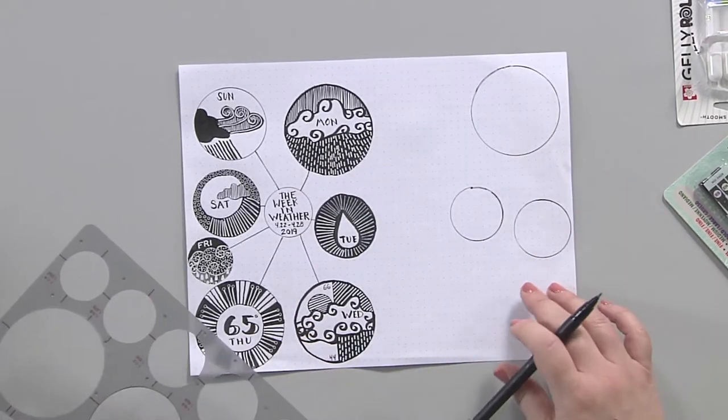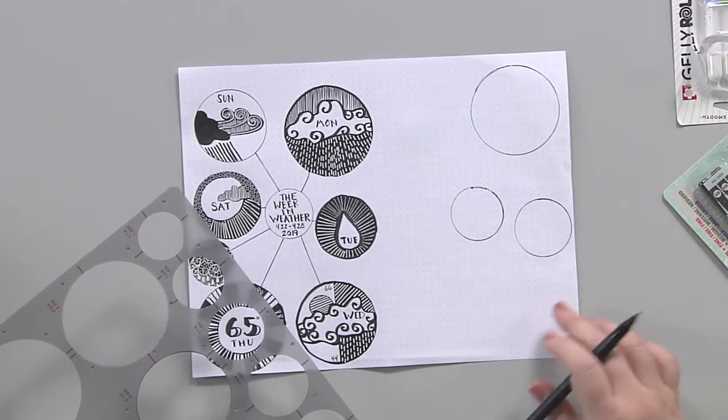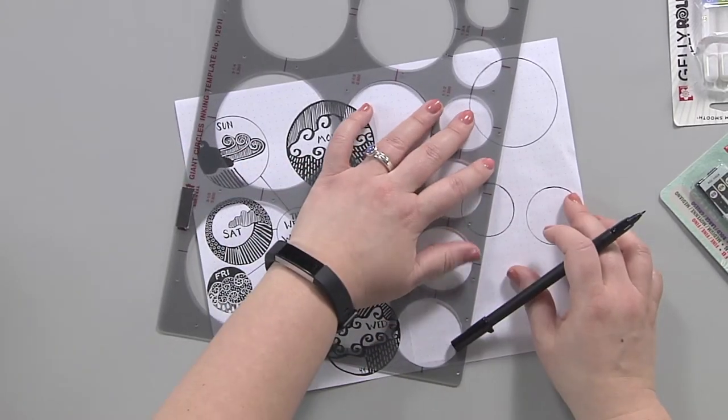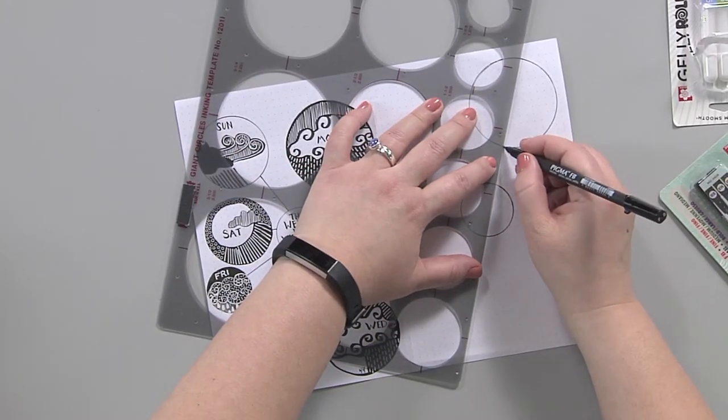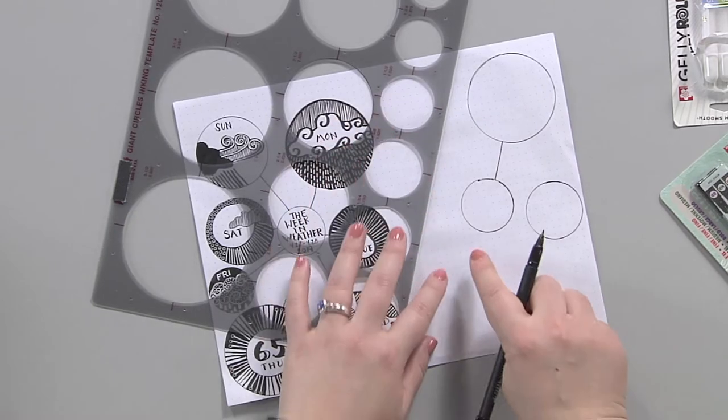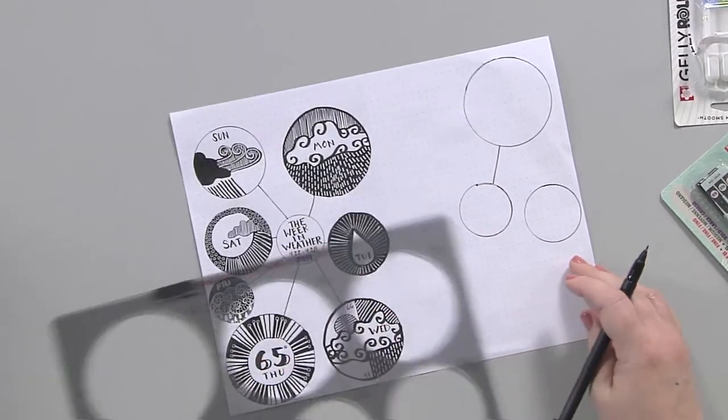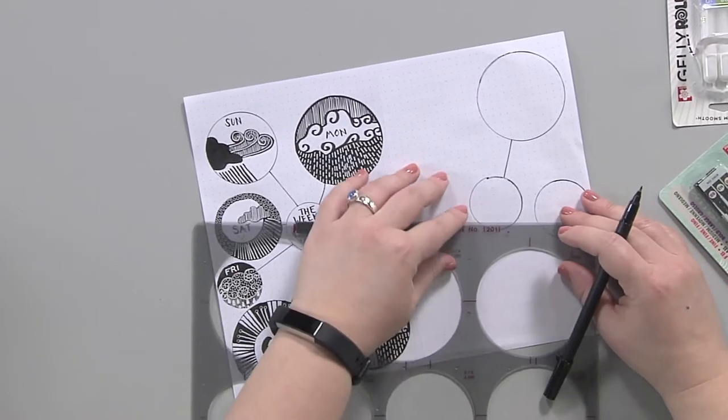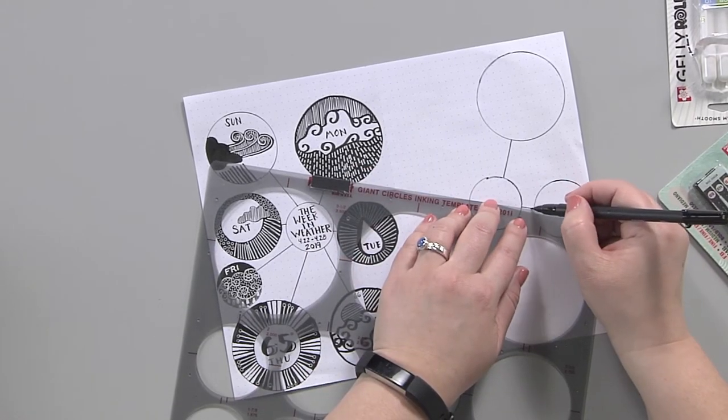Once you've done all the circles you're going to use lines to connect them. I suggest using the edge of your stencil as a ruler and most bullet journals have this sort of dot grid so you can even use the dots as a little bit of a guide to tell you how to line that up.